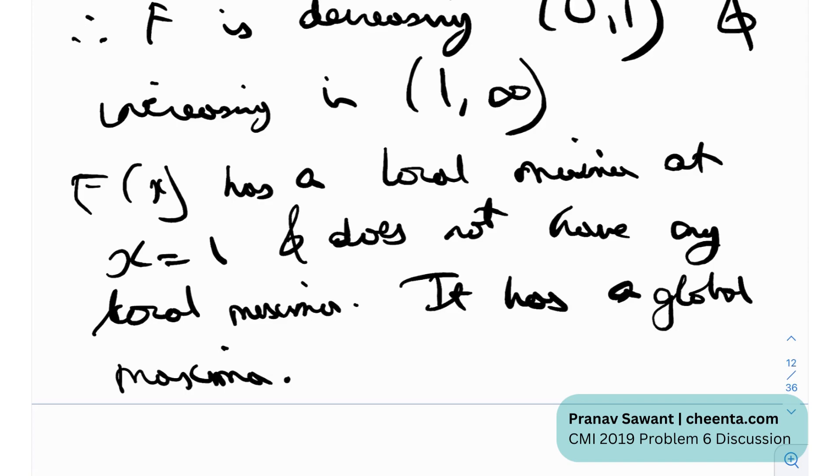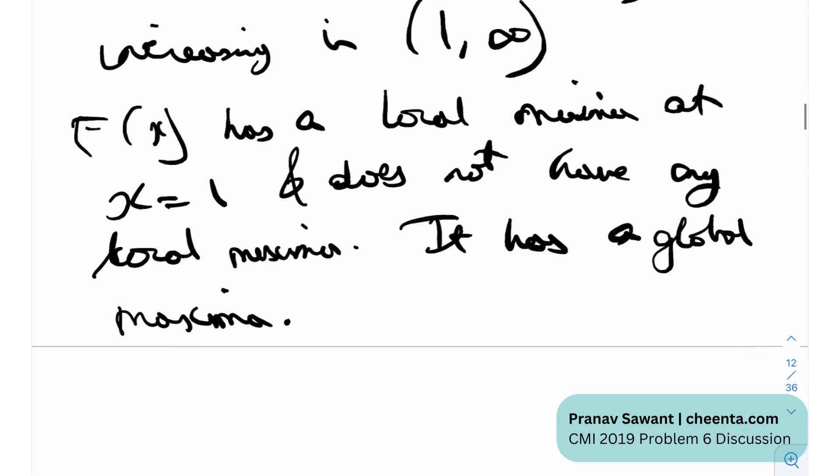So that is essentially what they had asked us in the problem. Part a was essentially computing the derivative under the integral sign, we just used the Leibniz rule. And part b was to determine the intervals in which this is increasing or decreasing. So yeah that was a very informative video and I hope you learned a couple of things over there, a couple of interesting things over there.